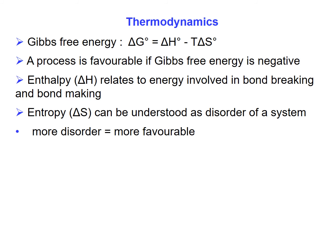A word on thermodynamics. For a chemical reaction to be thermodynamically spontaneous, the change in Gibbs free energy, delta G, needs to be negative. There are two factors within Gibbs free energy: enthalpy, delta H, and entropy, delta S, which also has a temperature dependence. Enthalpy relates to the energy it costs to break bonds (positive) but also the energy released in making new bonds (negative). Entropy, delta S, can be understood as disorder of a system. The Gibbs free energy equation has a negative sign for entropy, telling us that more entropy makes a process more favorable.